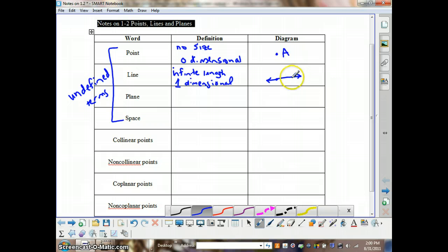And to show that it goes on forever in opposite directions, we draw arrows on the ends of the line. A line, and here I'm calling this line AB, and this script letter L is showing we could refer to this as line L.